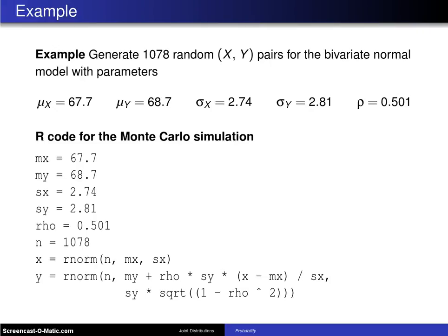So what happens when that bivariate normal random variate generation algorithm gets applied to a particular bivariate normal model? In this case, we want to generate 1078 random XY pairs from a bivariate normal model with parameters 67.7,